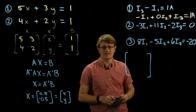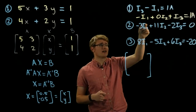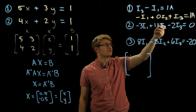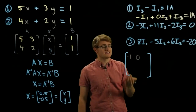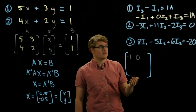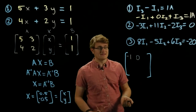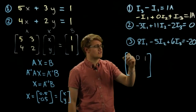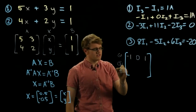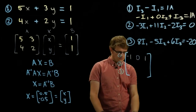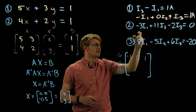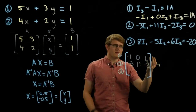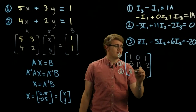Let's put these coefficients into the matrix. We have negative 1 — because negative 1 times I1 is negative I1. The coefficient for I2 is 0, which is why we added it. The coefficient for I3 is 1. You can't skip entries in a matrix — it just doesn't work. Continuing down for equations 2 and 3, we have negative 3, 11, negative 2, then 8, negative 5, and 6. Remember, we're just doing the coefficients of the variables.